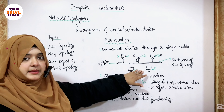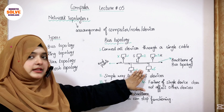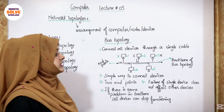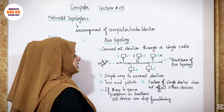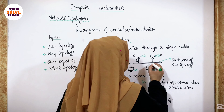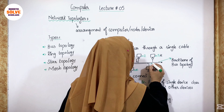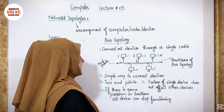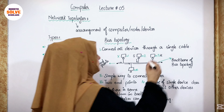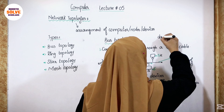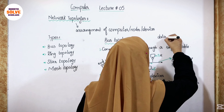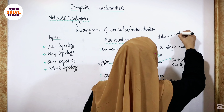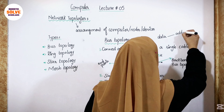If the address is matched with the device, it means it is the receiver and it accepts the data. If it is not matched, it means it is not the receiver, and the data continues to be transmitted further. When we communicate our data, we also mention the destination address along with the data.